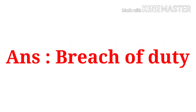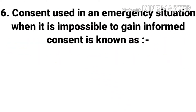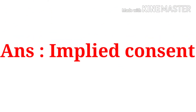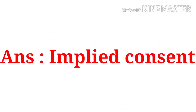The answer is breach of duty. Question 6: Consent used in an emergency situation when it is impossible to gain informed consent is known as — the options are: minor consent, emergency consent, implied consent, ordinary consent. The answer is implied consent.